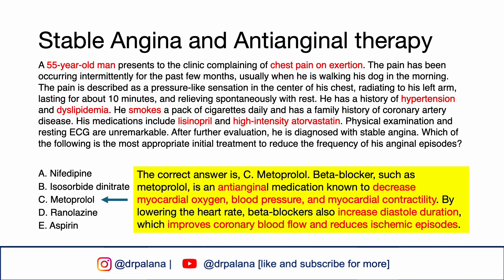A 55-year-old man presents to clinic complaining of chest pain on exertion. The pain has been occurring intermittently for the past few months, usually when walking his dog in the morning. The pain is described as a pressure-like sensation in the center of his chest radiating to his left arm, lasting about 10 minutes and relieved spontaneously with rest. He has a history of hypertension and dyslipidemia, smokes about a pack daily, and has a family history of CAD. His medications include lisinopril and high-intensity atorvastatin. Physical examination and resting EKG are both unremarkable. After further evaluation, he is diagnosed with stable angina. Which of the following is the most appropriate initial therapy to reduce the frequency of his angina episodes?